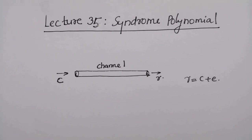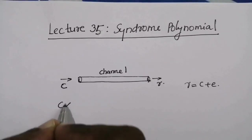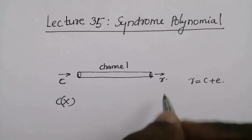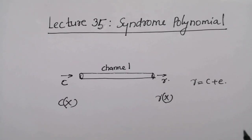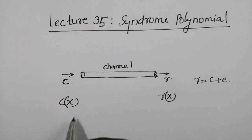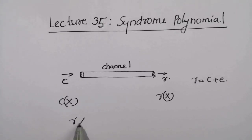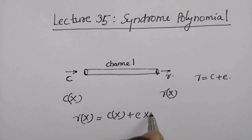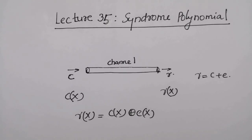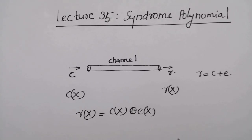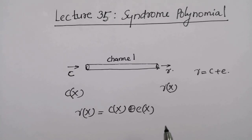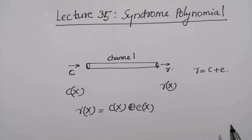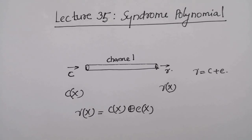In the case of cyclic code, let c(x) be the code polynomial transmitted through the noisy channel, and let r(x) be the received polynomial. Then r(x) and c(x) are related as r(x) equal to c(x) plus e(x), where this is XOR addition, and e(x) is the error polynomial corresponding to the error pattern created by the channel noise. Let the received polynomial be a polynomial of degree n minus one or less.